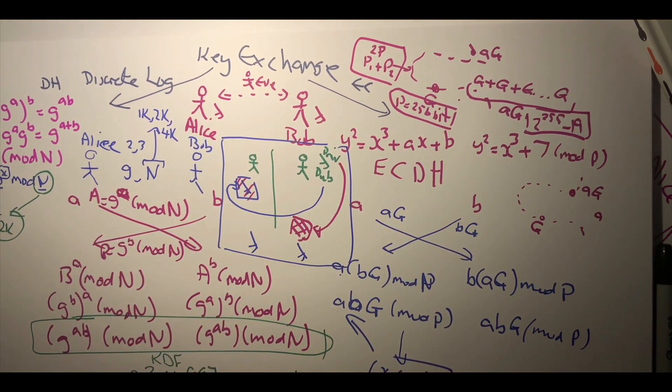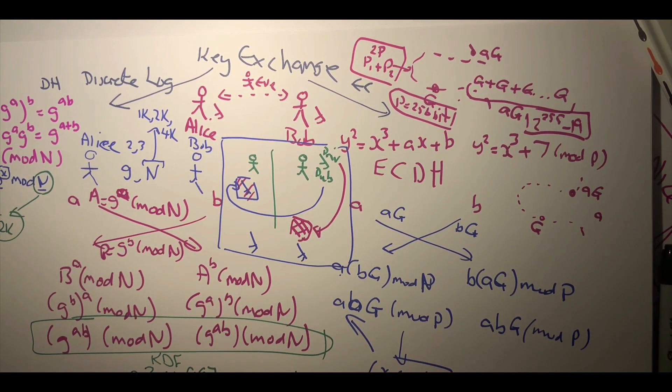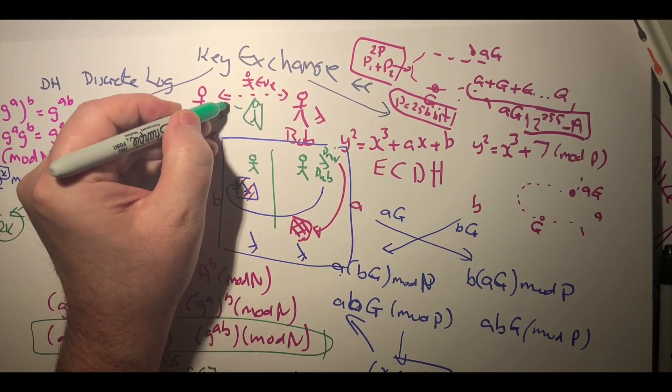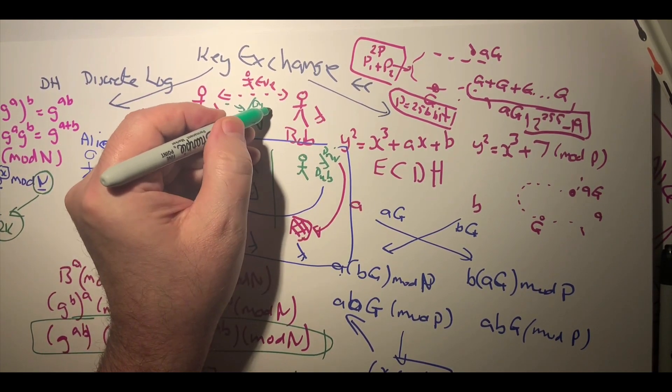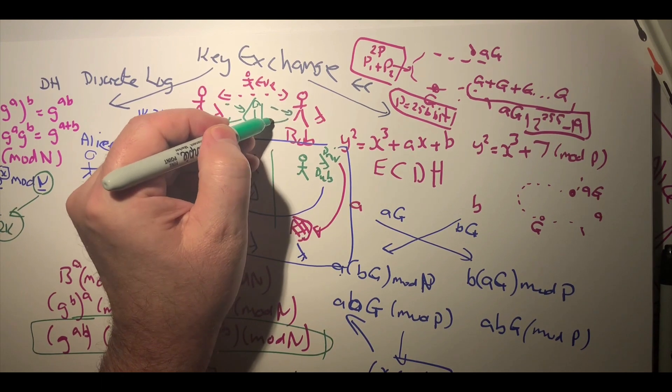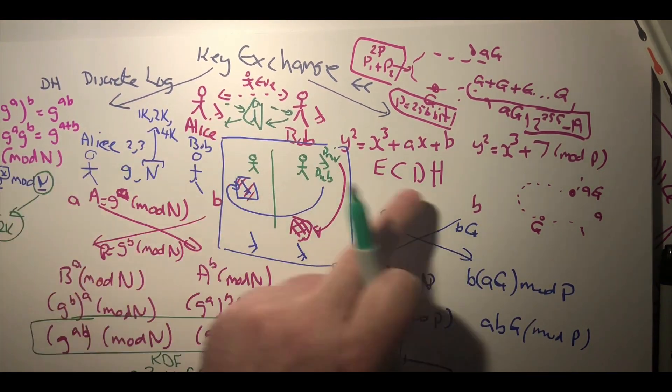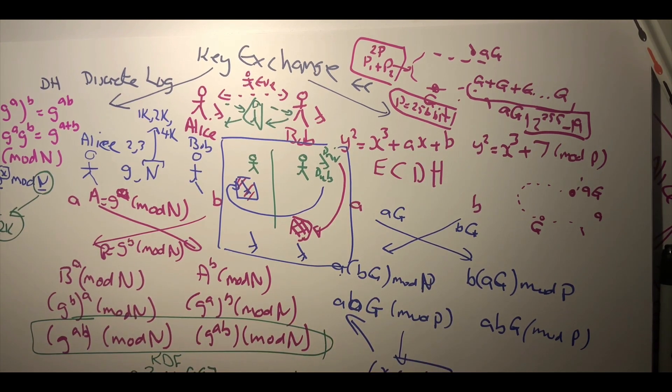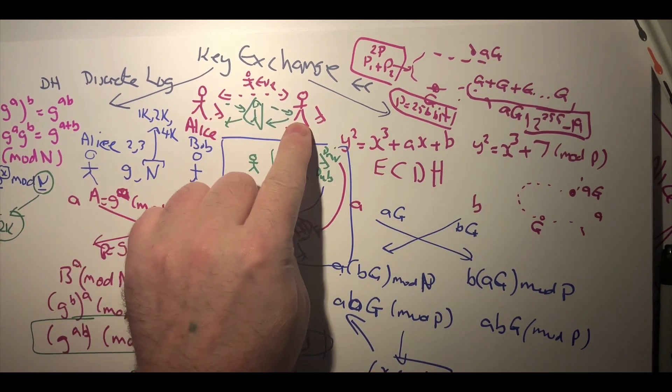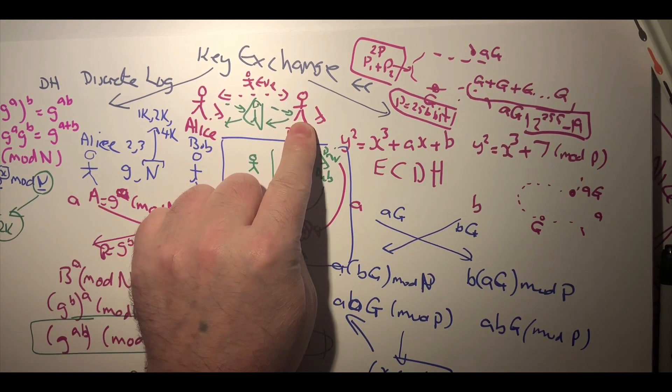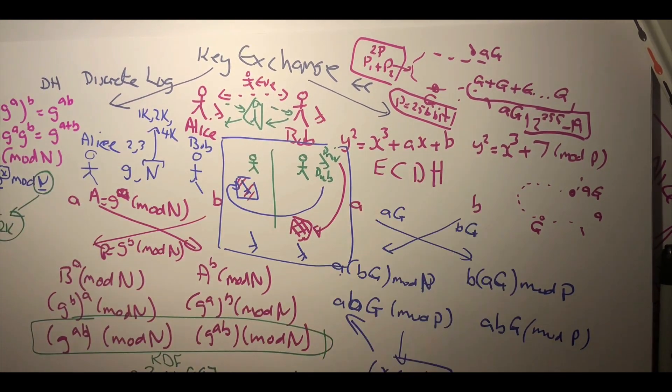So there is another level above this that allows both Bob and Alice to identify themselves as part of the key exchange. Both the methods that we outlined can suffer from Eve being in the middle and communicating with Bob and Alice, because we're never really communicating the keys identifying the end points within the session.